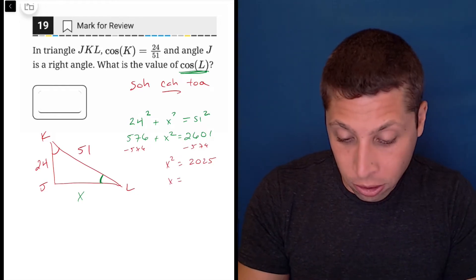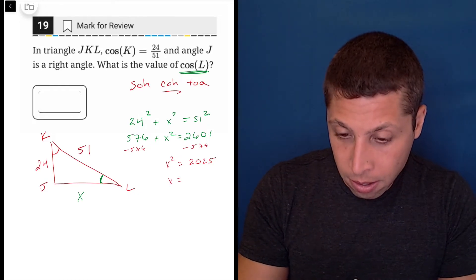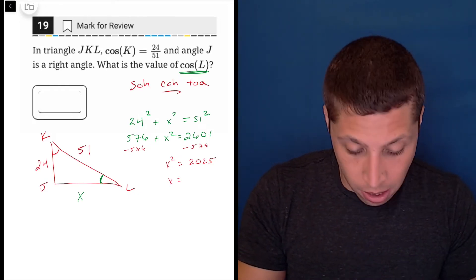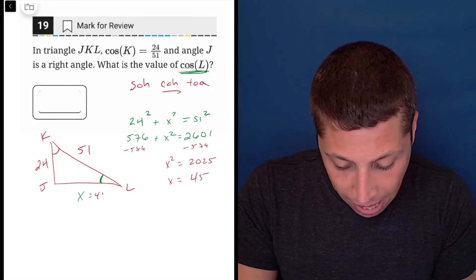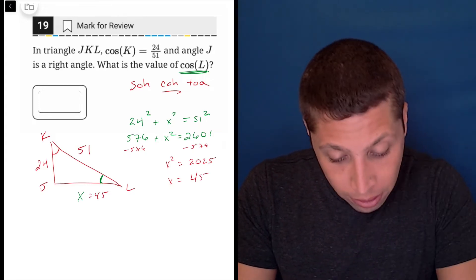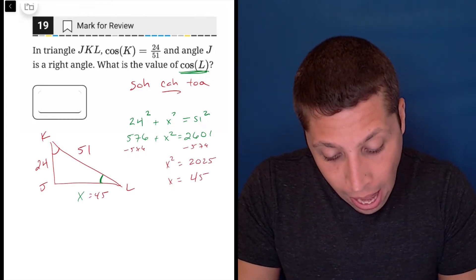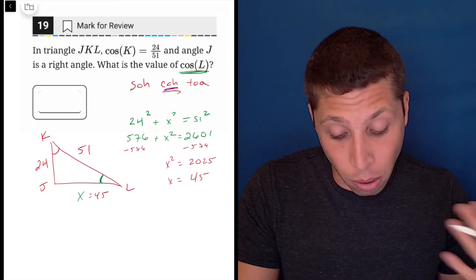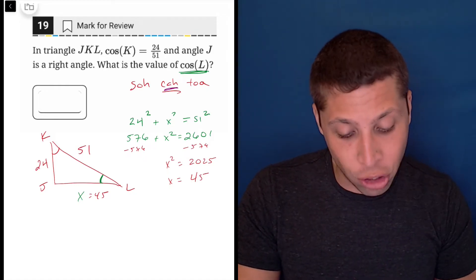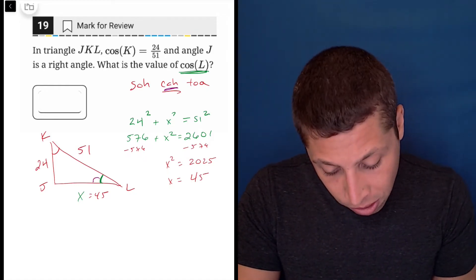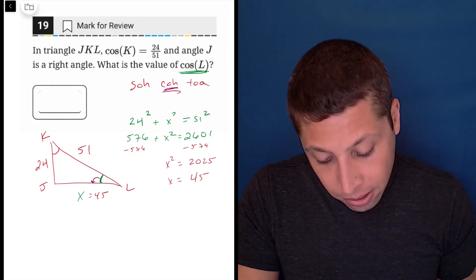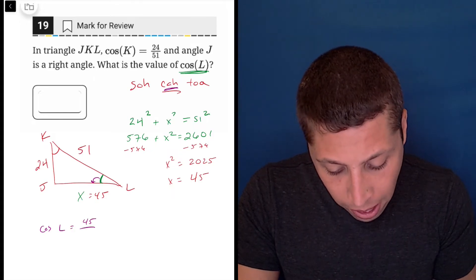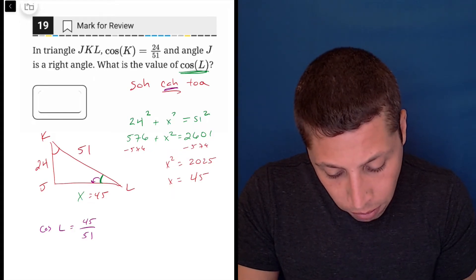Take the square root of each side — raise to the half power — and we get X equals 45. So now the rest is really easy. How do we find cosine of L? The same thing we did with cosine of K: we do adjacent, which is the 45 side.